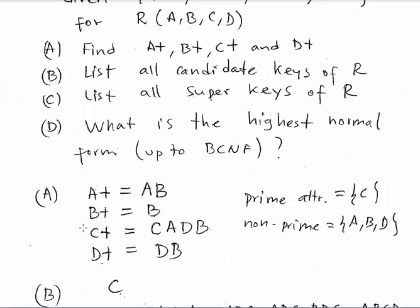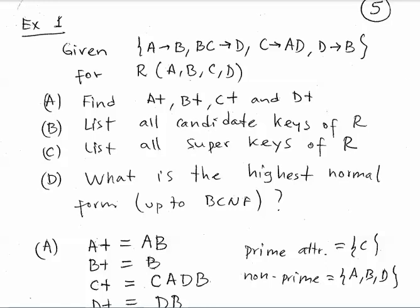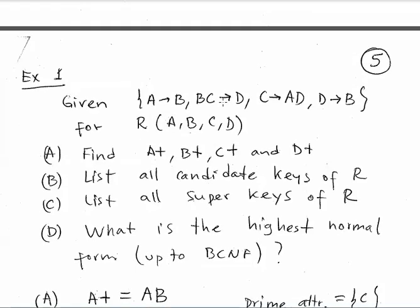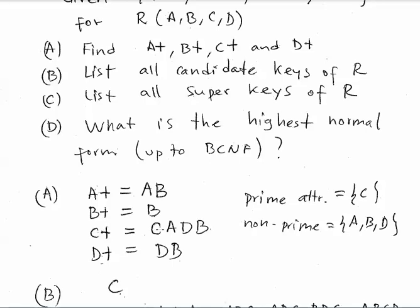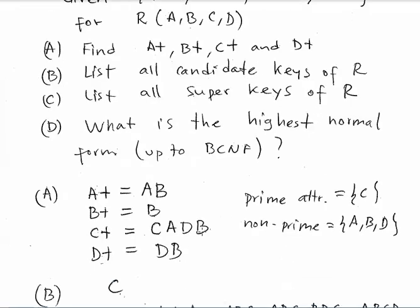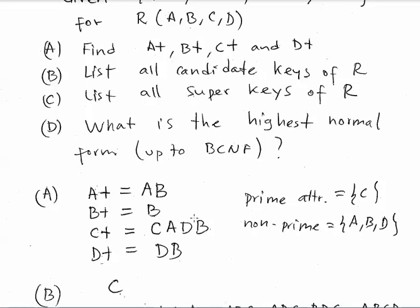Let's go with question one. We compute the closures: initial value for A+ is A, for B+ is B, for C+ is C, for D+ is D. From A we can get B, so A+ = {A, B}. For B+: nothing else can be derived from B alone. For C+: C derives A and D, so we add A and D. Then with C, A, D — from A and D we can derive B — so we add B. Then C+ = {C, A, D, B} — C is a candidate key! D+ gives us B and that's it.